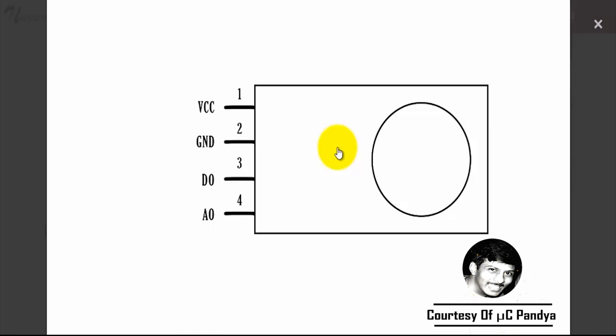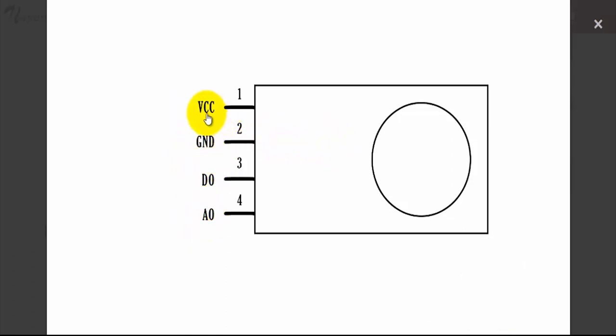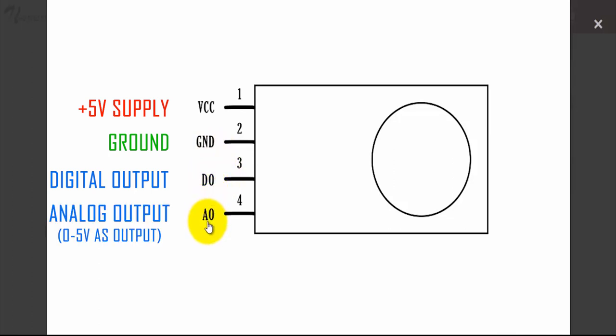It has 4 pins namely VCC, Ground, D0 and A0. The VCC pin powers the module. Normally we use 5 volts for this purpose. This pin is connected to ground or 0 volts. Digital out or D0 provides a high when gas is detected. Analog out or A0 outputs 0 to 5 volts analog voltage based on the intensity of the gas.